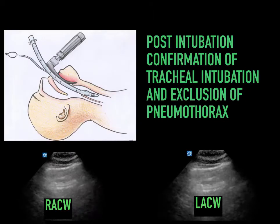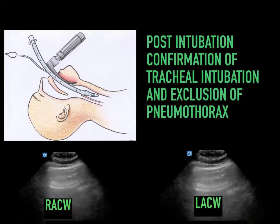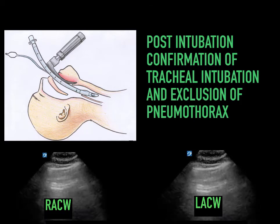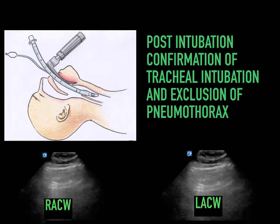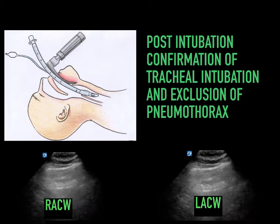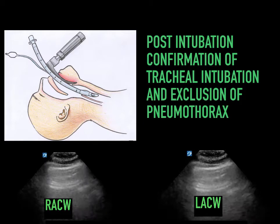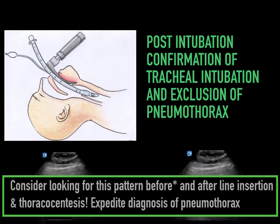We can use lung sliding to confirm tracheal intubation and to exclude mainstem intubation on either side, and to exclude post-intubation pneumothorax. As we can see here in both images, post-intubation we have lung sliding demonstrated on either side of the thorax. We can look for this pattern before and after line insertion and thoracocentesis, which can really expedite the diagnosis of pneumothorax.